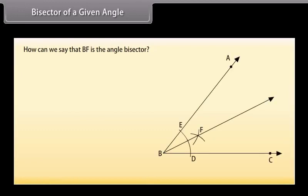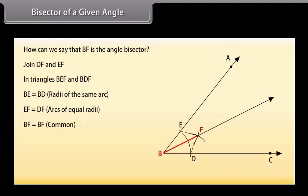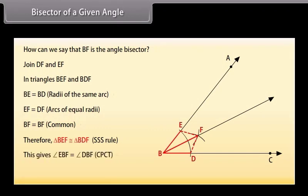How can we say that BF is the angle bisector? Let us prove this. Join DF and EF. Now, in triangles BEF and BDF: BE equals BD because these are the radii of the same arc; EF equals DF because these are arcs of equal radii; BF equals BF, common. Therefore, by SSS congruence rule, triangle BEF is congruent to triangle BDF. This gives angle EBF equals angle DBF by CPCT. Hence, BF is the angle bisector.